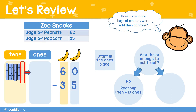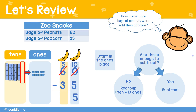Exchange one ten for ten ones. Record that by decreasing the number of tens from six to five and increasing the number of ones from zero to ten. Now we have enough and we can subtract: ten minus five equals five ones, and five tens minus three tens is two tens.